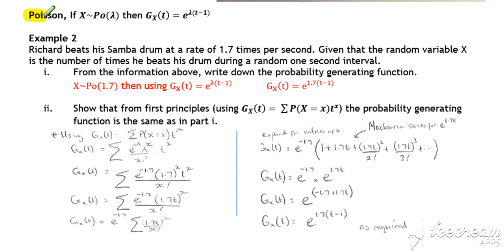Next up then, if we consider our Poisson, then the quotable probability generating function for a Poisson is e to the lambda times t minus 1, again, given in the formula booklet.